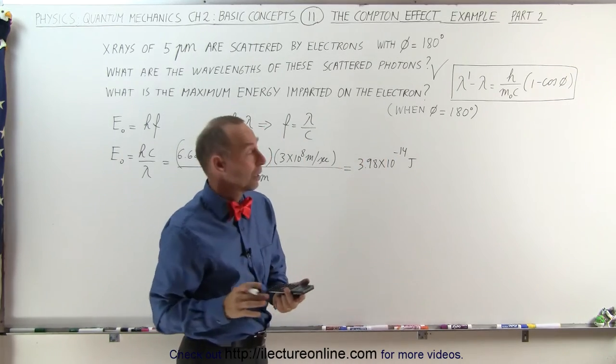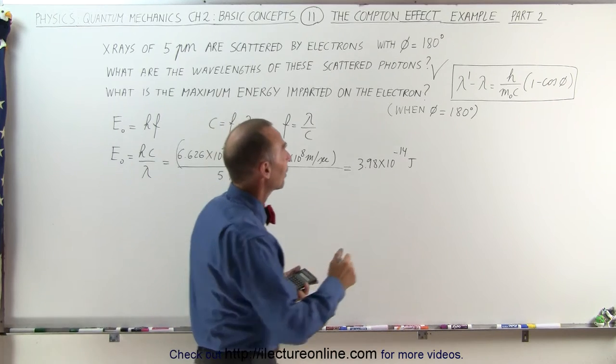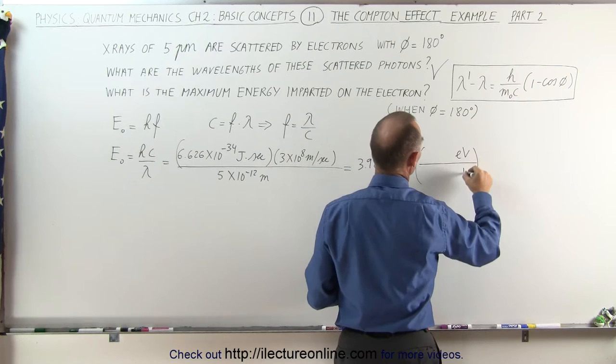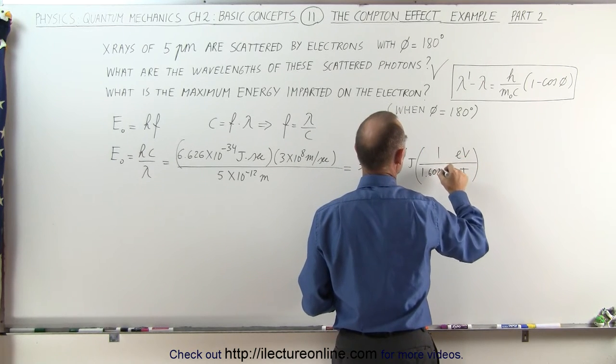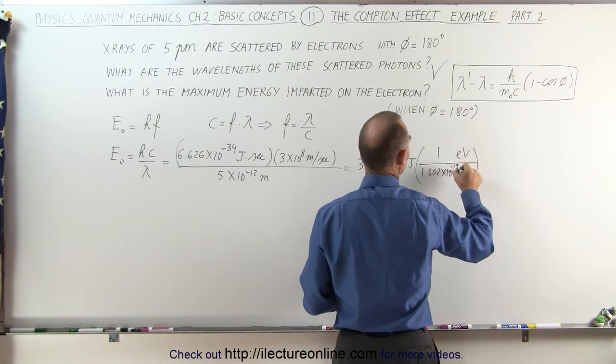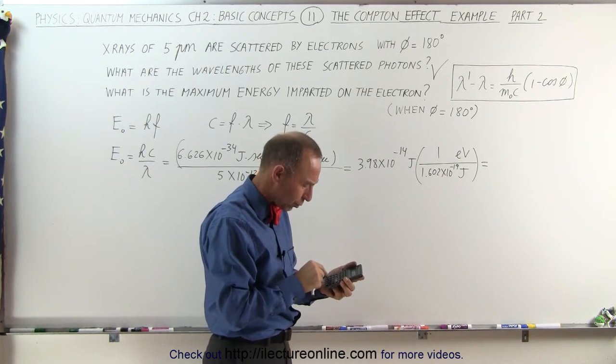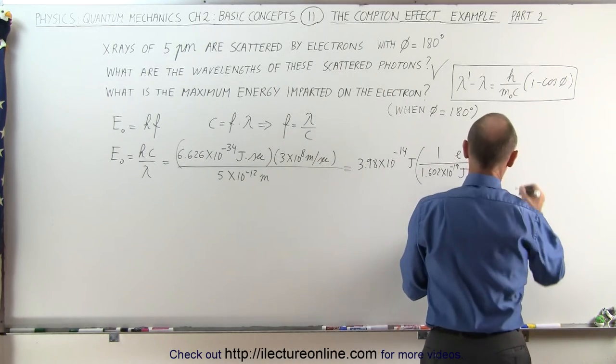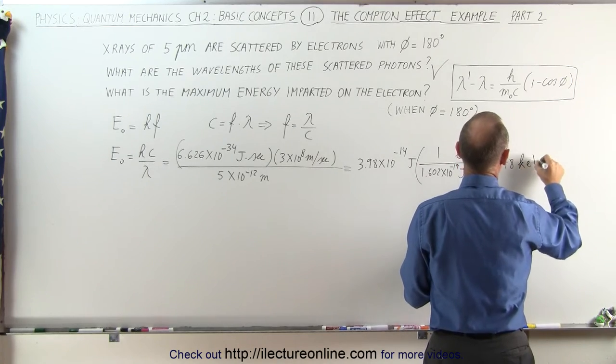Now typically we like to talk about the energy of photons in terms of electron volts, so let's convert that. We have electron volts at the top, joules at the bottom: one electron volt equals 1.602 times 10 to the minus 19 joules. So if we divide that by 1.602E-19, we have about 248 kilo electron volts.